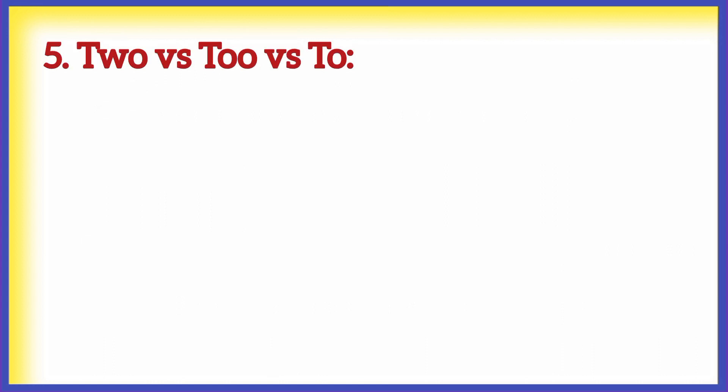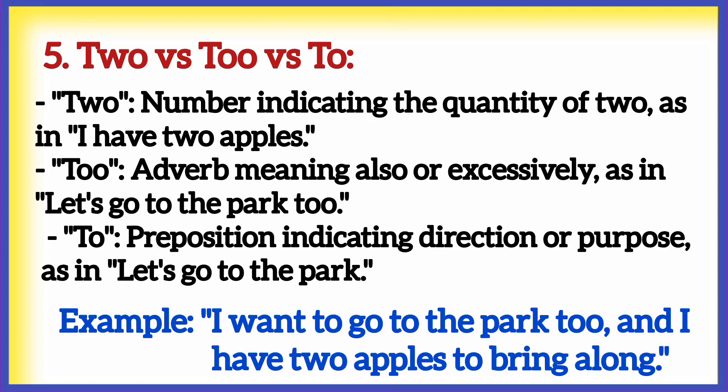Number five: two versus too versus to. 'Two' is the number indicating the quantity two, as in 'I have two apples.' 'Too' is an adverb meaning also or excessively, as in 'let's go to the park too.' 'To' is a preposition indicating direction or purpose, as in 'let's go to the park.' Example: 'I want to go to the park too, and I have two apples to bring along.'